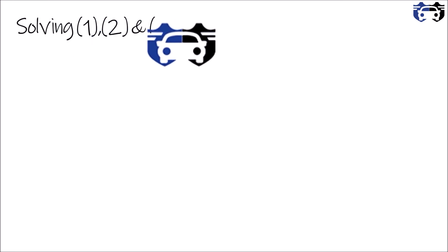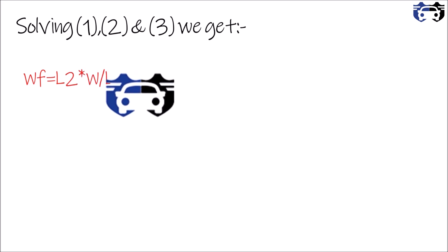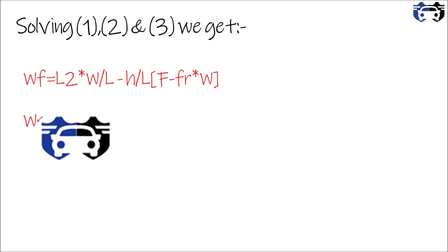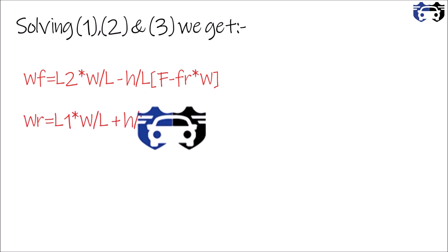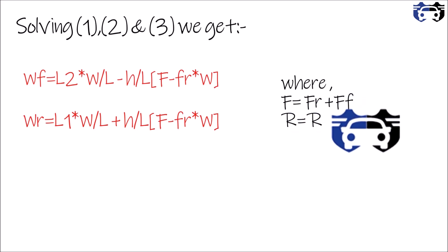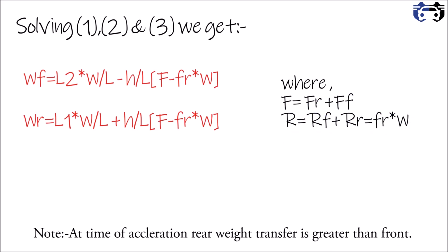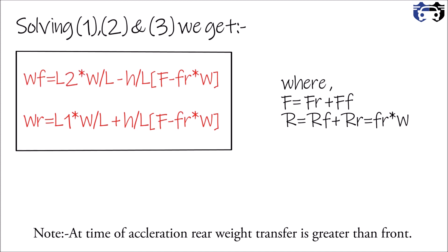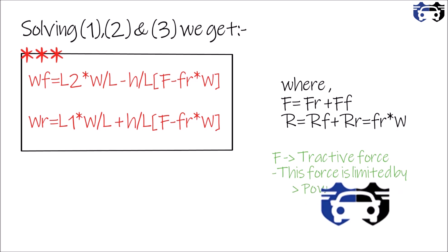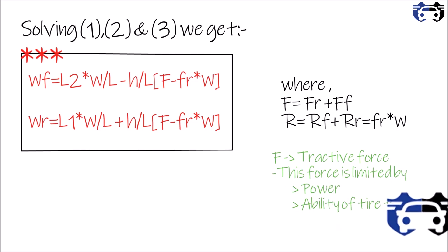Solving equations 1, 2, and 3 together, we get the final results: Wf = (l2/l)·W − (h/l)·(F − fr·W), and Wr = (l1/l)·W + (h/l)·(F − fr·W), where F equals Fr + Ff (total tractive force) and R equals Rf + Rr (total rolling resistance). This is the very important equation for weight distribution on the front and rear tires. Note that F, the tractive force, is limited by power and also by the ability of the tire to take the load.